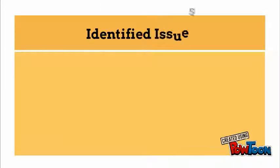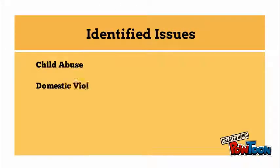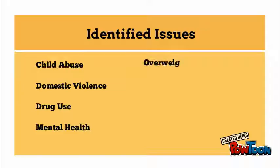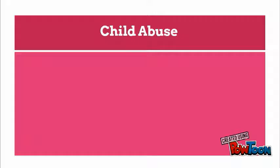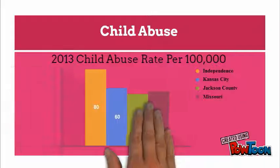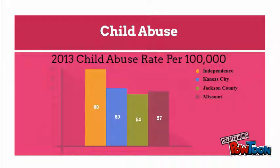Eight issues stood out to us. These eight were selected based on the perceived overall and child public health issues respondents chose on the survey, as well as secondary data. The secondary data was used to compare Independence to the county, state, and nation. While many of the factors are interrelated, data shows they lead to higher rates of death and disability for Independence residents. I will go through each topic briefly to give some context of what we found in the Community Health Assessment.